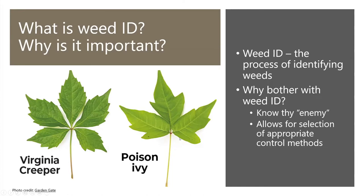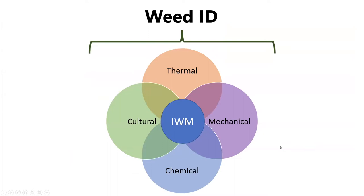On the left side of your screen is Virginia creeper; on the right is poison ivy. If you brush against Virginia creeper, nothing will happen. If you brush against poison ivy, there's a good chance you'll get a rash. Weed identification is the first step in management — before you can manage your weed problem, you need to be able to ID the weed. I like to think of it as the foundation for weed management and control.